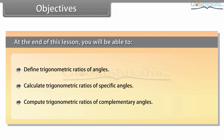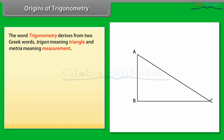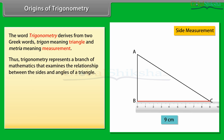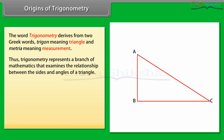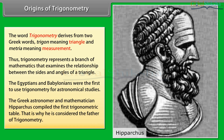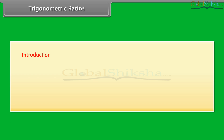Origins of trigonometry: the word trigonometry derives from two Greek words — trigon, meaning triangle, and metria, meaning measurement. Thus, trigonometry represents a branch of mathematics that examines the relationship between the sides and angles of a triangle. The Egyptians and Babylonians were the first to use trigonometry for astronomical studies. The Greek astronomer and mathematician Hipparchus compiled the first trigonometric table, which is why he is considered the father of trigonometry.